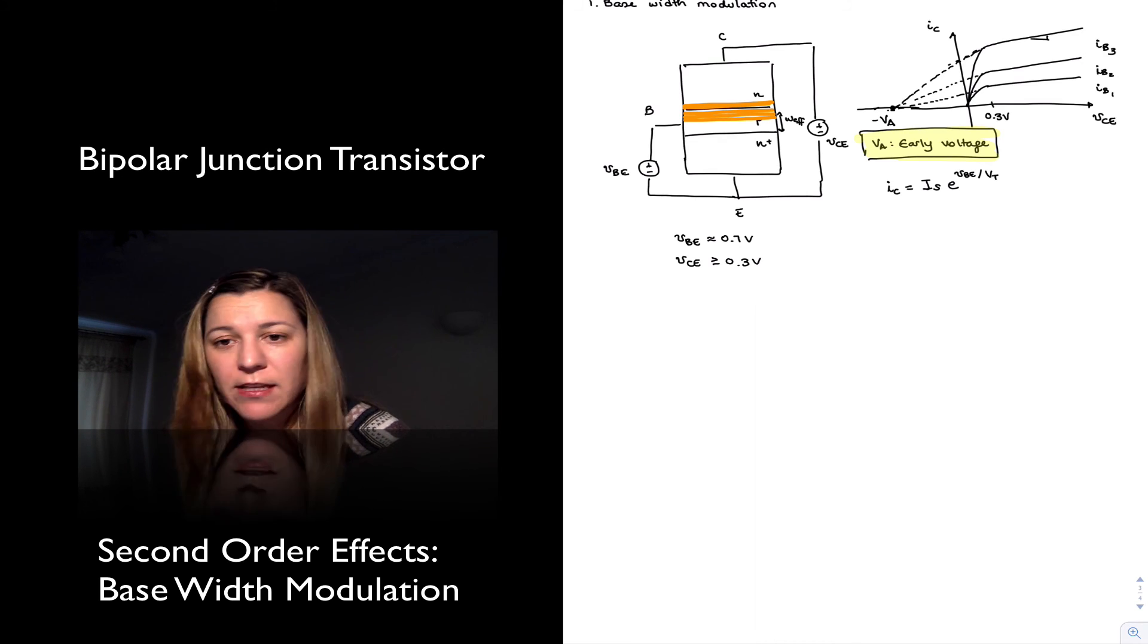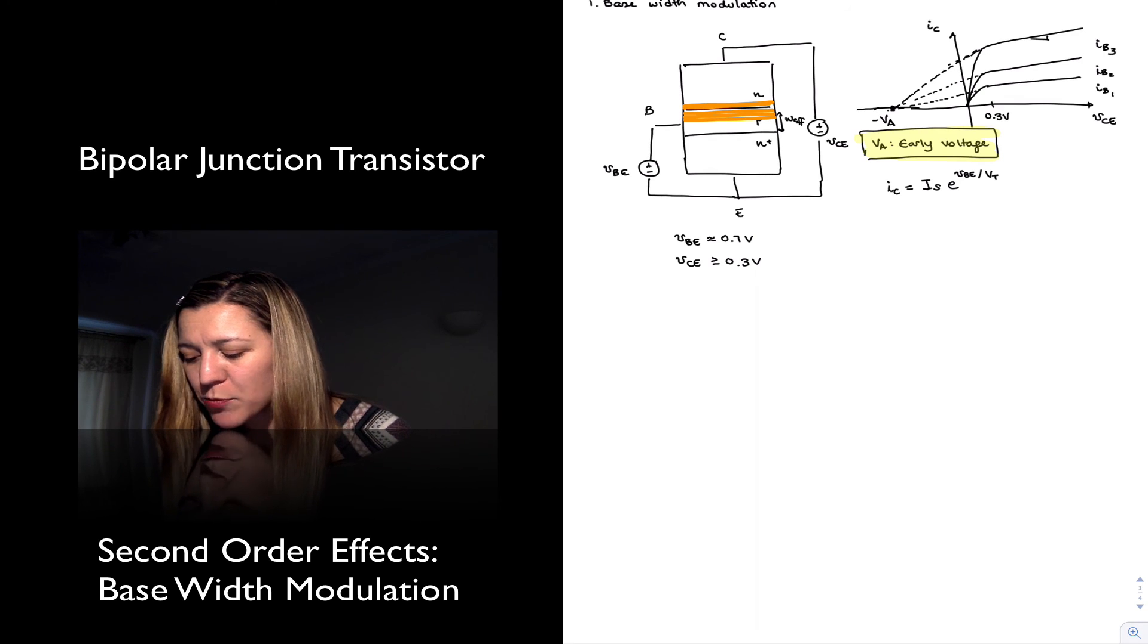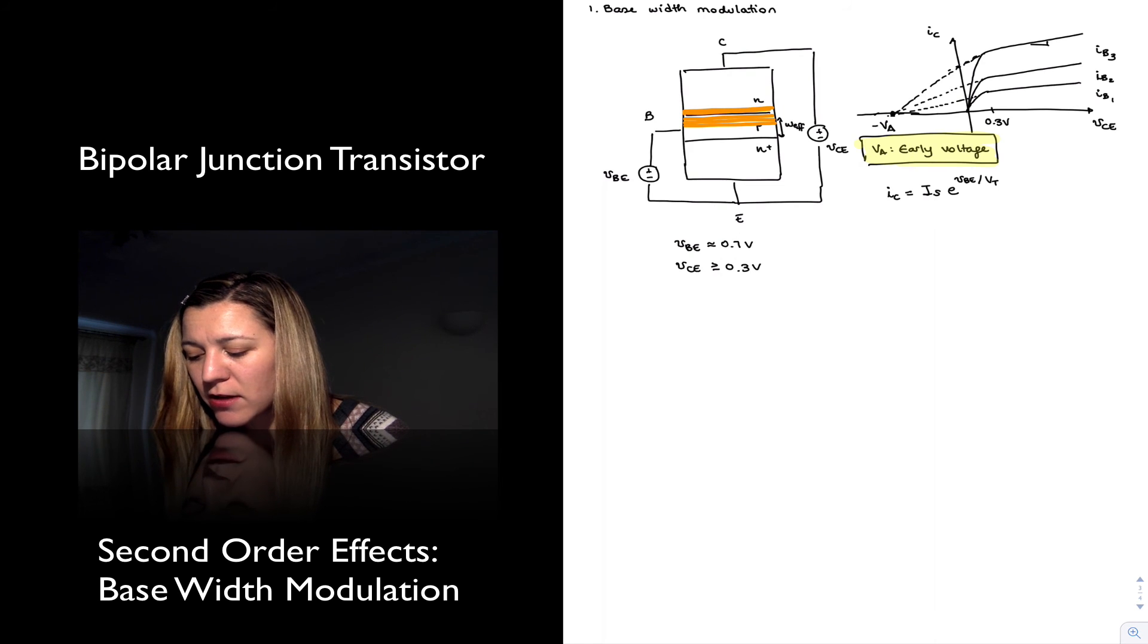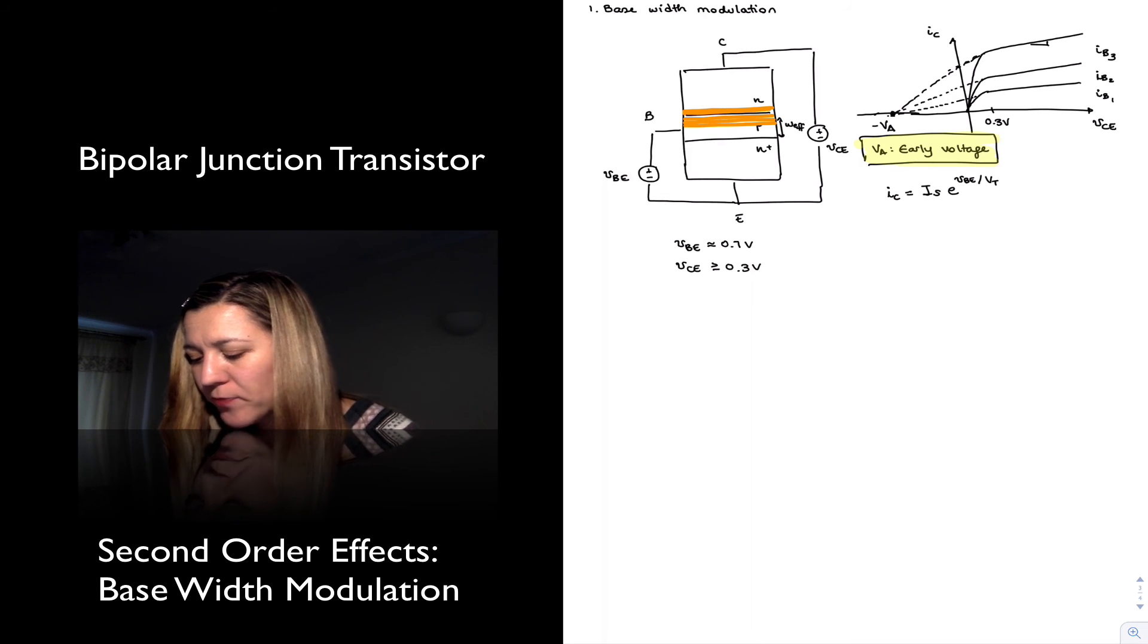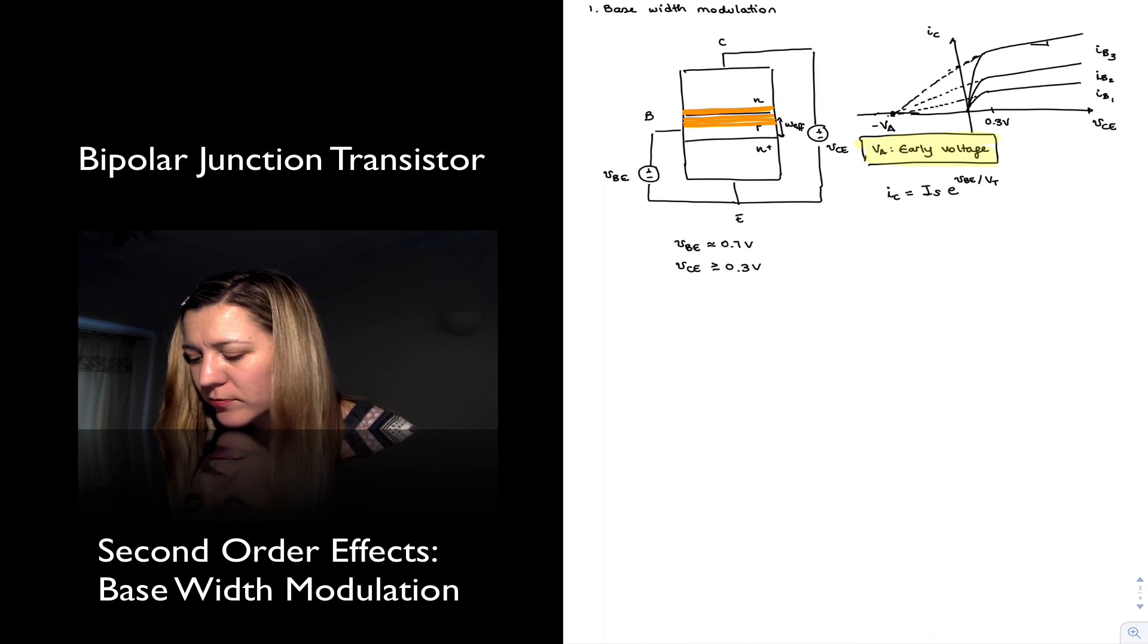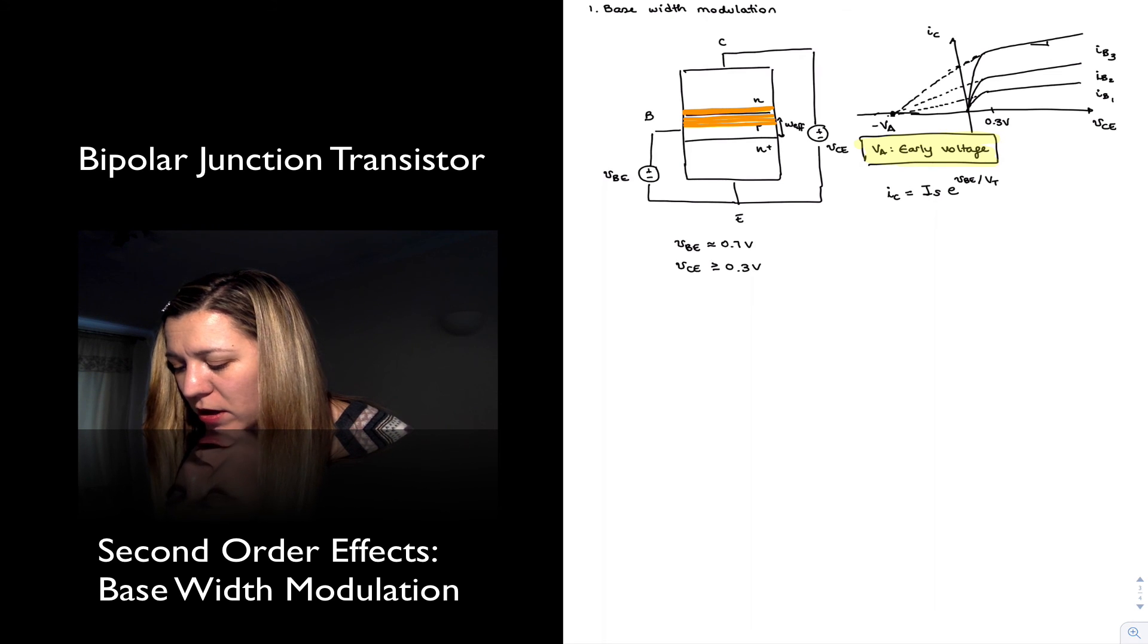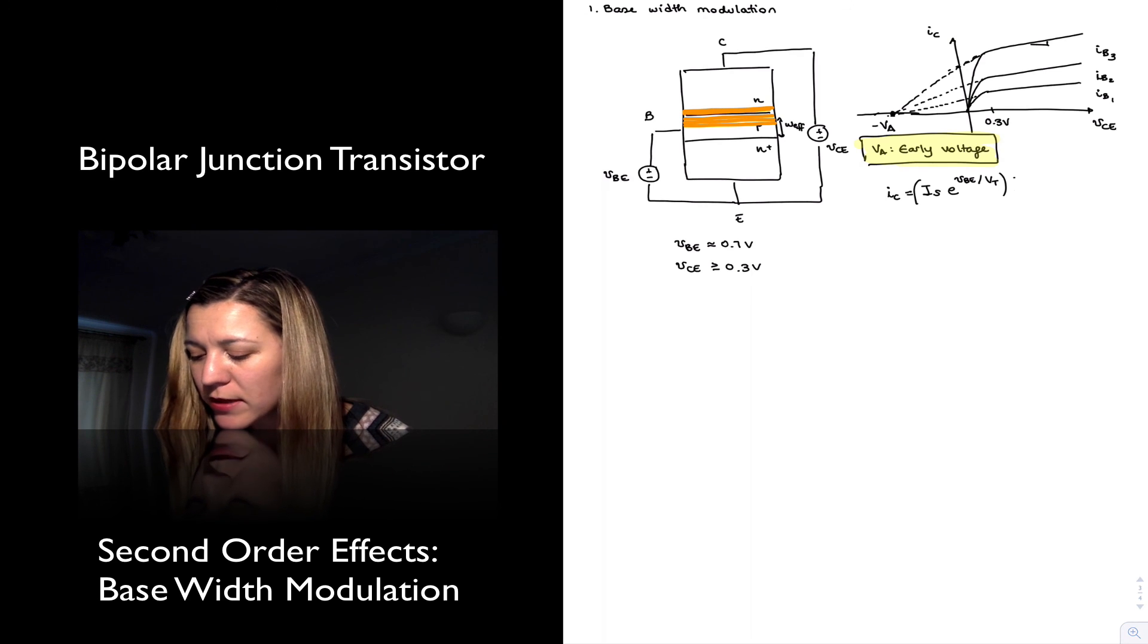In this case, I've written IC because we have established already that we're going to make the approximation for an NPN transistor that IC is approximately equal to IE. So we have that exponential relationship. And we can see that IC depends on certain things, but amongst them VBE, that's the input voltage. But it's independent of VCE, the collector-emitter voltage.